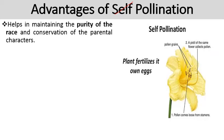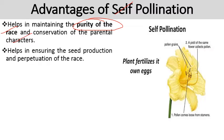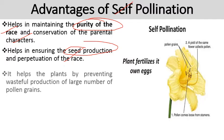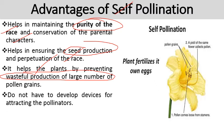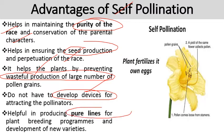Next, the advantages of self-pollination. First, it helps in maintaining the purity of the race — parental characters are conserved. It helps in ensuring seed production and perpetuation of the race. It helps the plant by preventing wasteful production of large numbers of pollen grains, which is an advantage over cross-pollination. It also helps in producing pure lines for plant breeding programs and the development of new varieties.